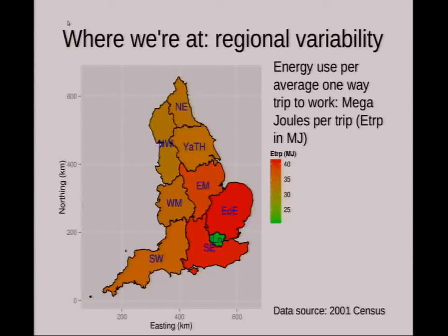This is the result of the average distance by mode. You've got a load of columns with cross-tabulated mode and distance categories. From that, you can work out how much energy, on average, each trip is using. You multiply it up throughout all — there are about 99 columns — and then each one has a different energy factor. Multiply them all up and find the average.